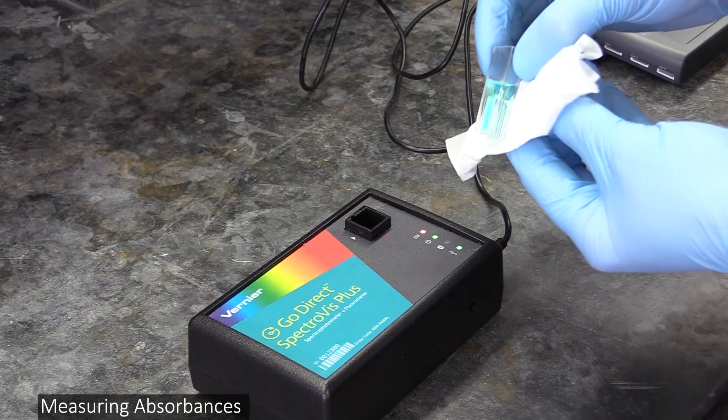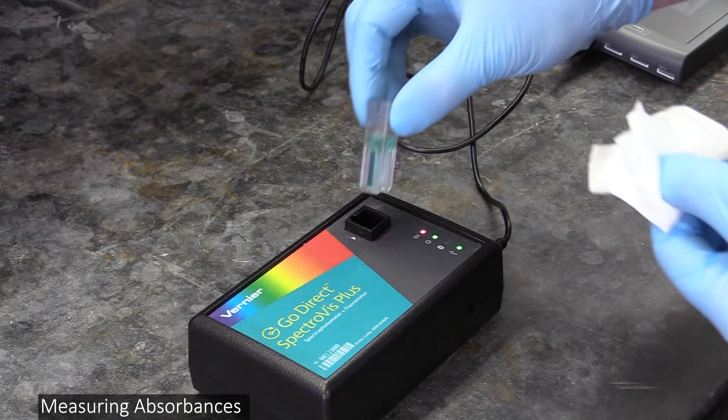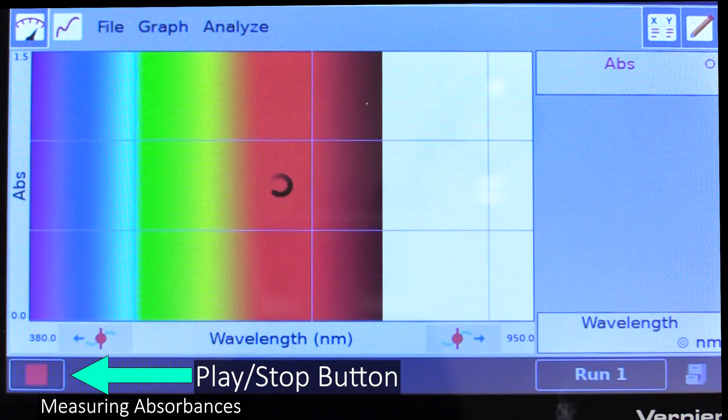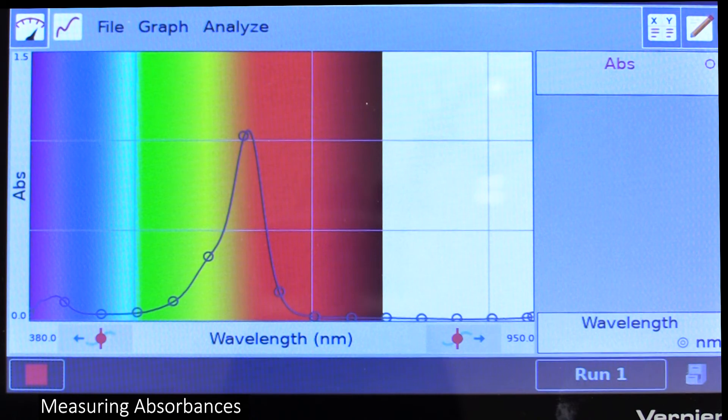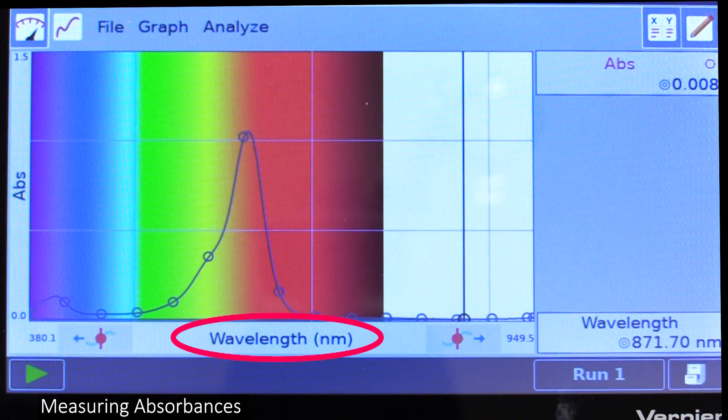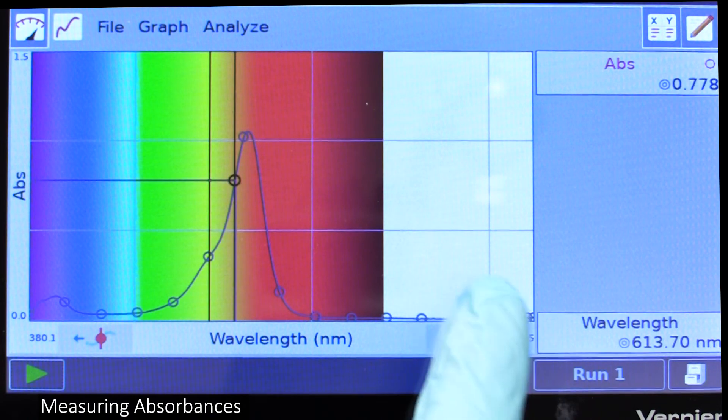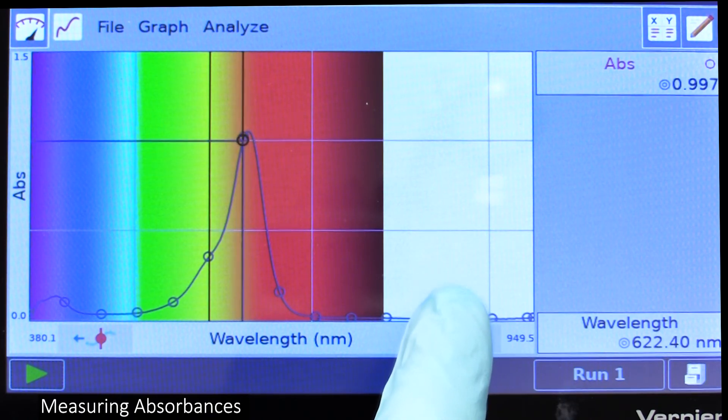Now it's time to analyze a solution. Start by filling a cuvette with solution, put it in the sample holder, and press the play button on the computer screen. Give it a second to finish the reading, then press stop. What you'll get is a graph with absorbance on the Y axis and light wavelength on the X. You can check the absorbance at any given point by clicking on a part of the graph or using the keys at the bottom to move back and forth along it.